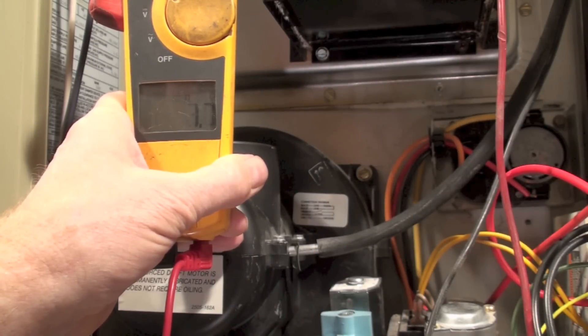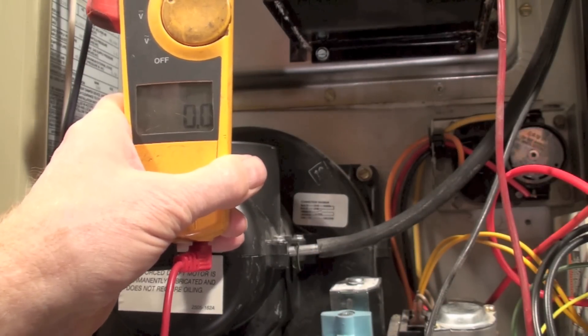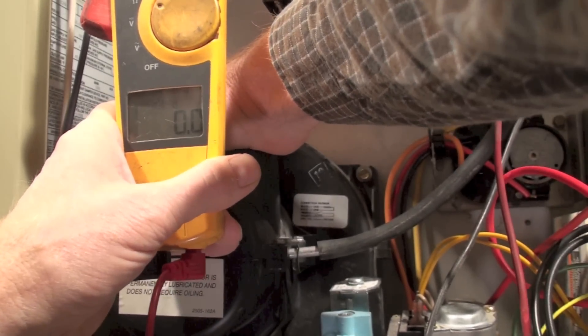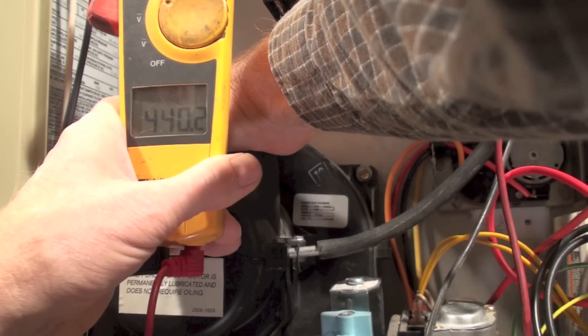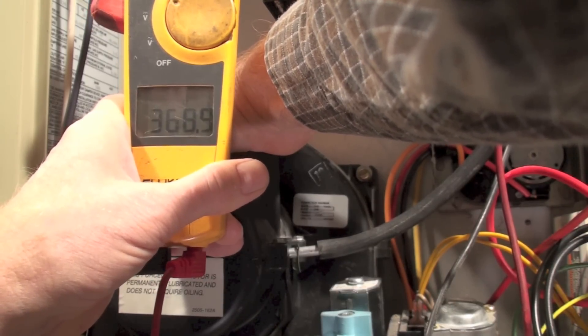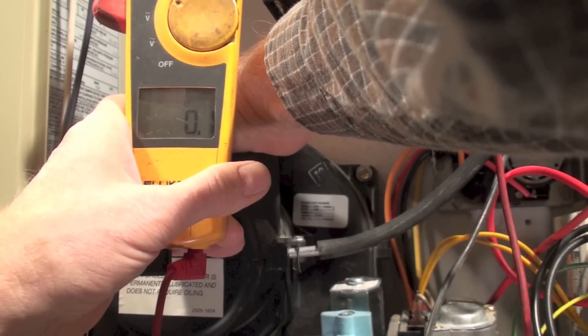And here we are covering up the combustion air inlet, and again you'll see the pressure switch does open when it's completely blocked off.